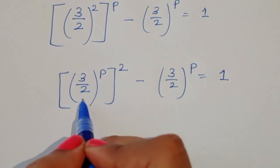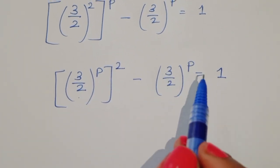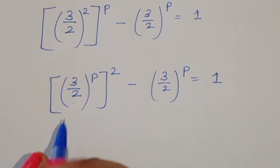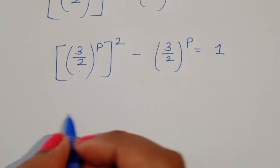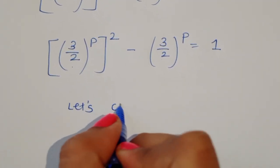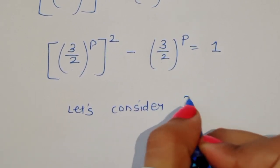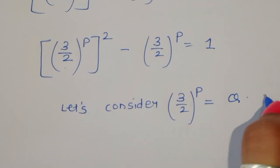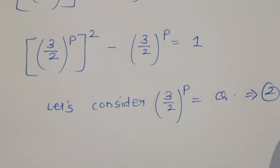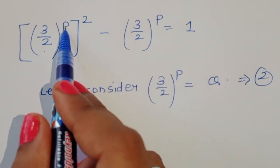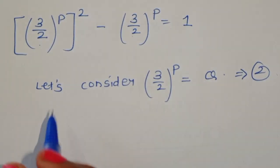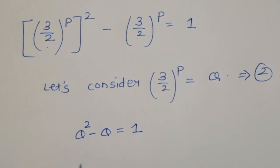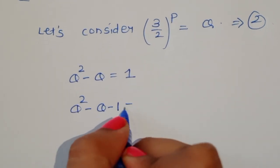We notice the same term 3 upon 2 power p appearing in both places. To simplify, let's consider q is equal to 3 upon 2 power p — this is equation number 2. Substituting, q squared minus q is equal to 1, which we rewrite as q squared minus q minus 1 is equal to 0. This is a quadratic form.